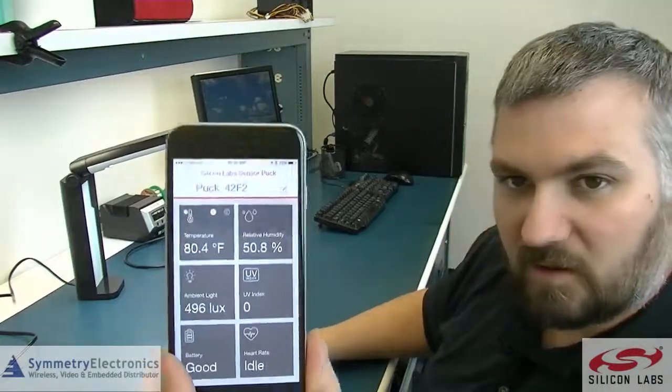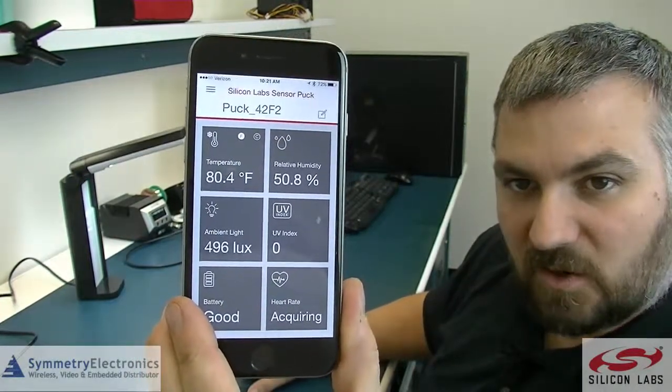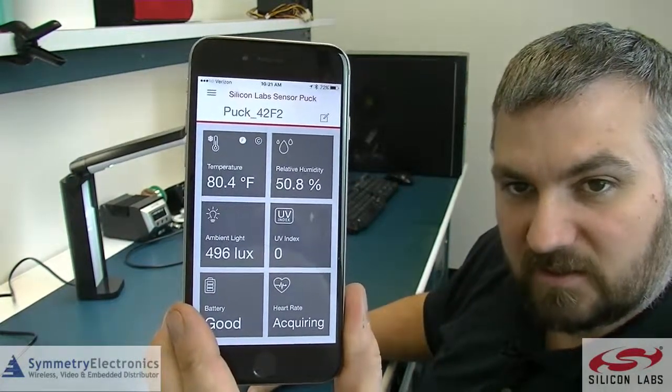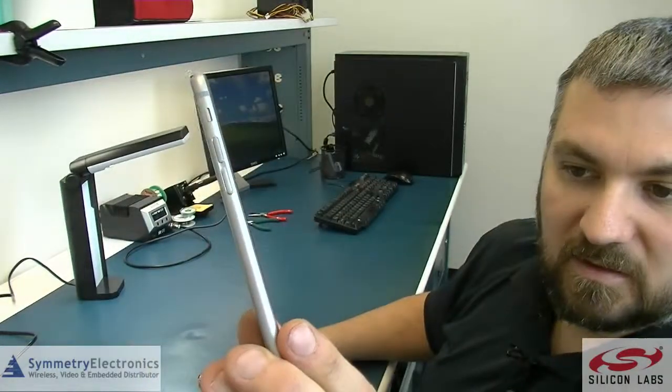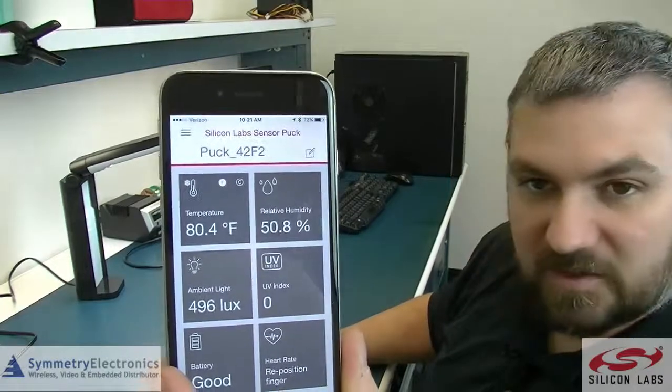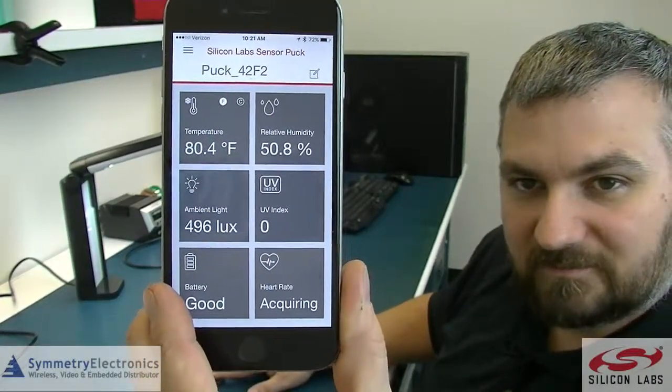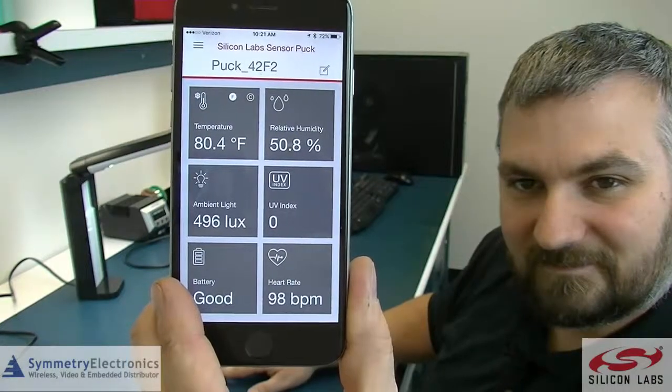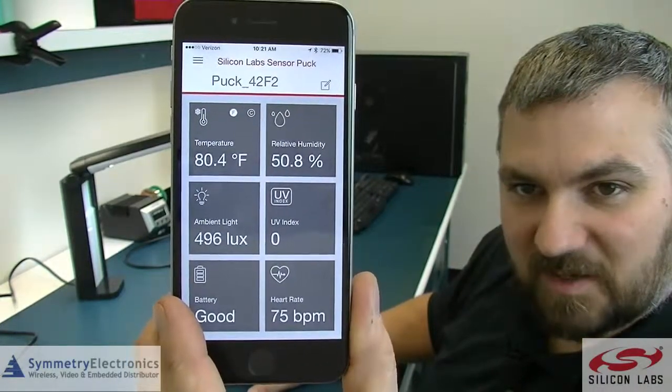Now see it says acquiring as it's acquiring my heart rate via that optical sensor. It says reposition finger. So let's go ahead and I'll move my finger. Now it's acquiring again. And there we go, 75 beats per minute according to my heart rate.